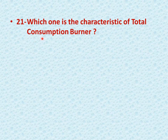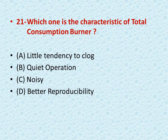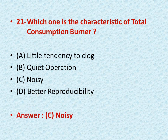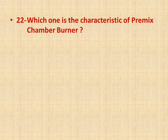Question number twenty-one: which one is a characteristic of total consumption burner? Options: A is little tendency to clog, B is quiet operation, C is noisy, D is better reproducibility. The right answer is C — noisy. The total consumption burner is noisy, which is also its disadvantage.